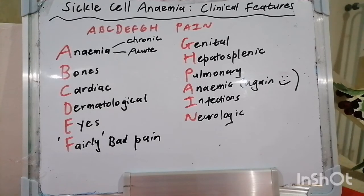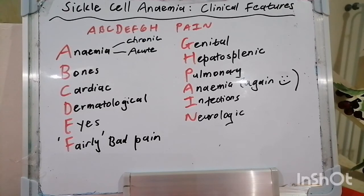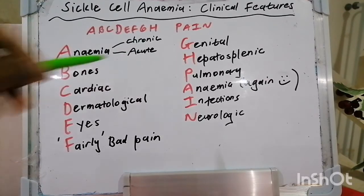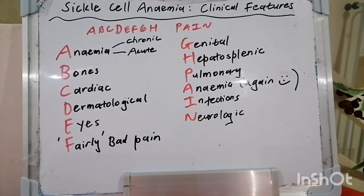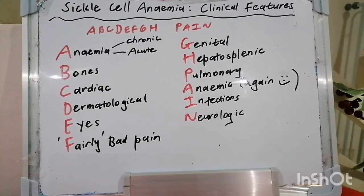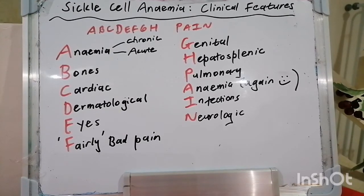For acute chest syndrome — which presents with chest pain, pulmonary infiltrates, cough, progressive anemia, hypoxemia, with or without fever — treat the precipitating factor, make provision for fluids, pain control, and transfuse. For priapism, which falls under the genital issues, hydrate the patient, provide analgesia, transfuse, and get an urgent urology consult. Preoperatively, transfuse to a hemoglobin of 10.